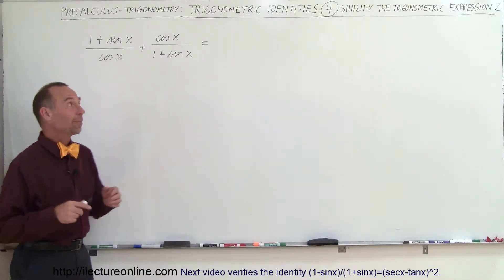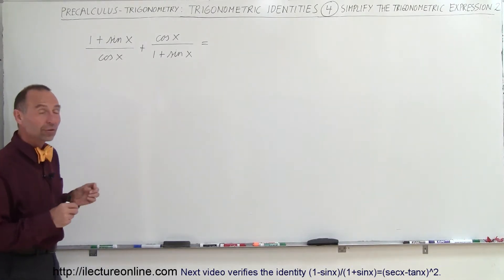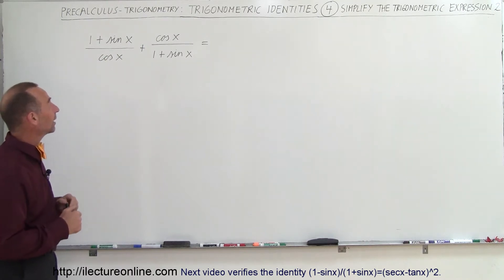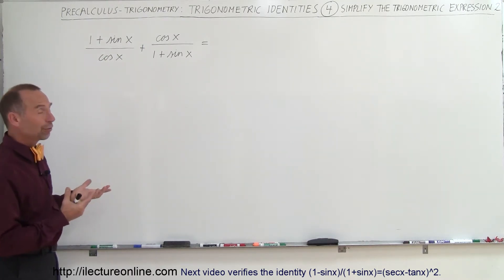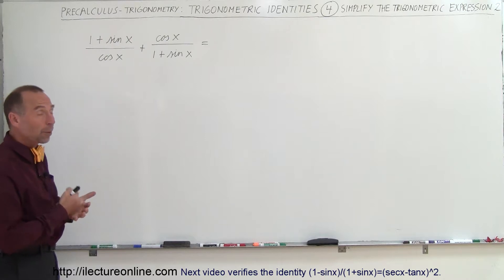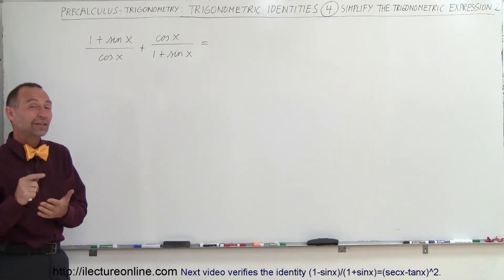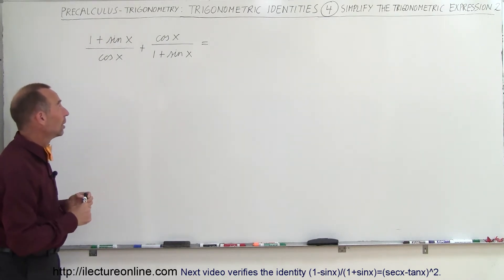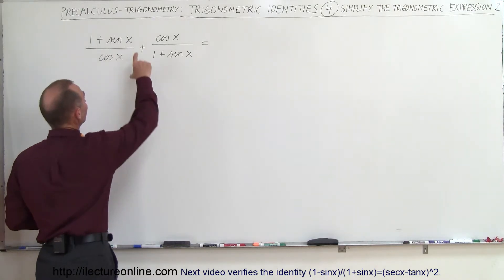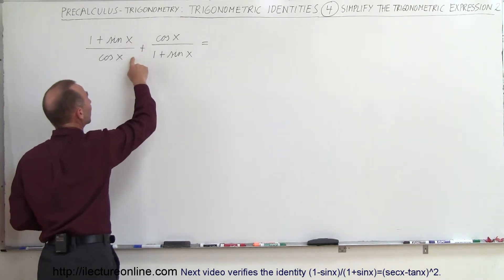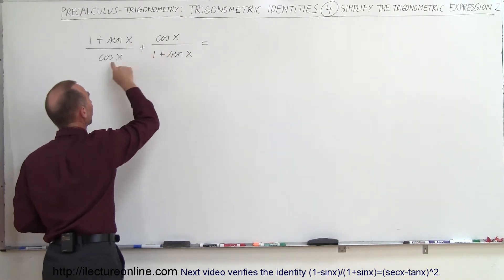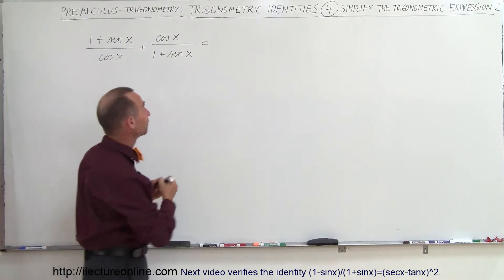Welcome to our lecture online. Here's another example of how we can use simple trigonometric identities to solve something like this. First of all, we have an addition of two fractions here, and probably what we want to do is find the common denominator, which is the product of the two. We're going to multiply the top and the bottom of each fraction by the other's denominator. Let's see what we get.